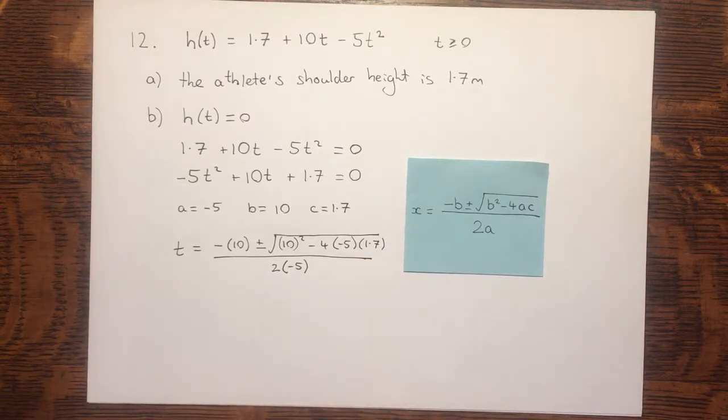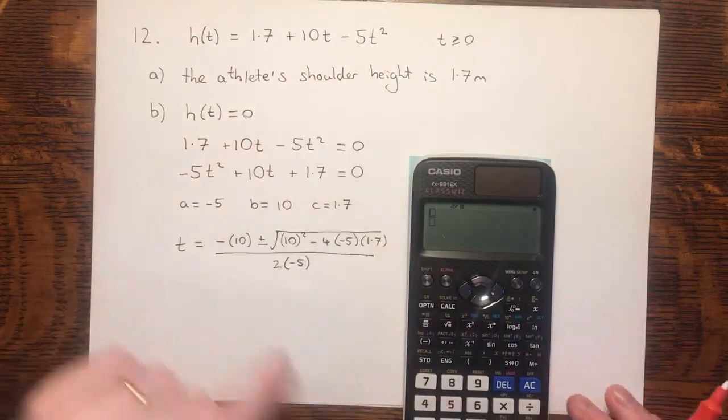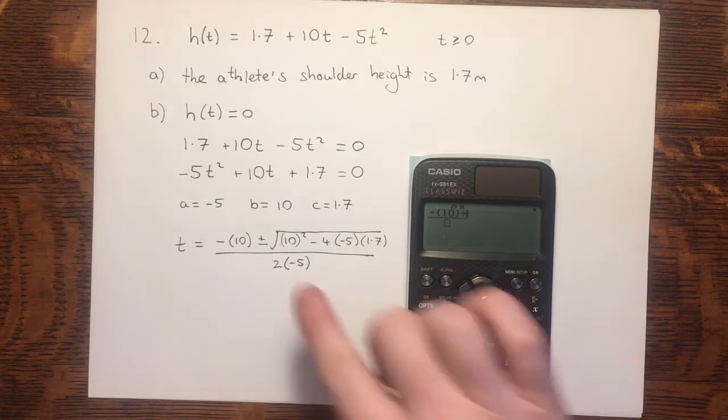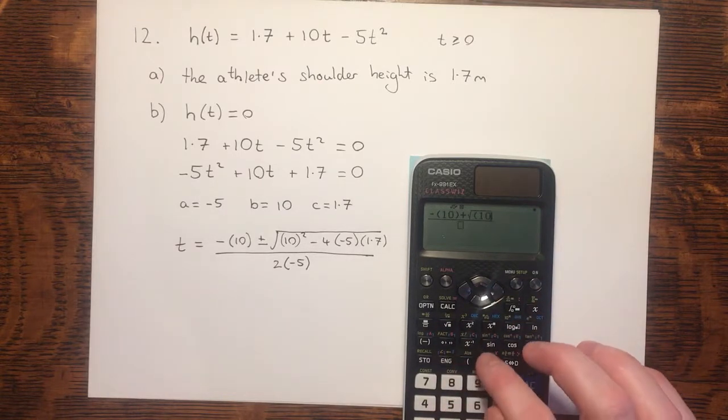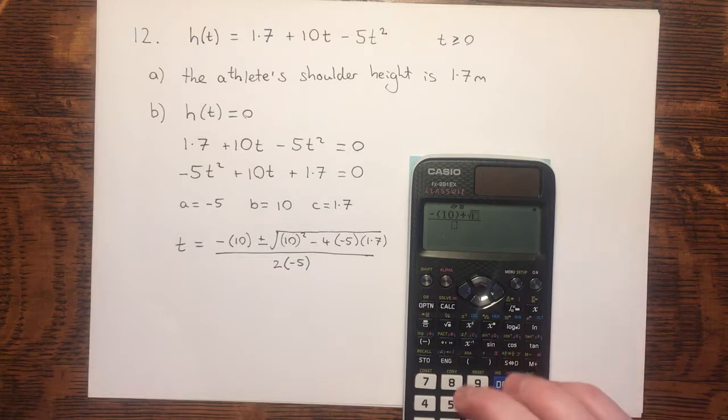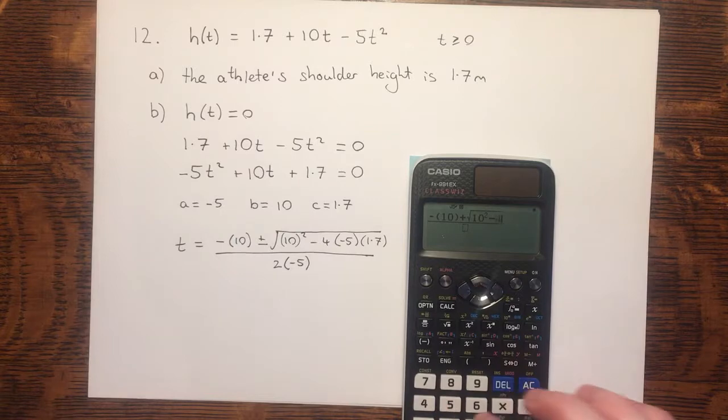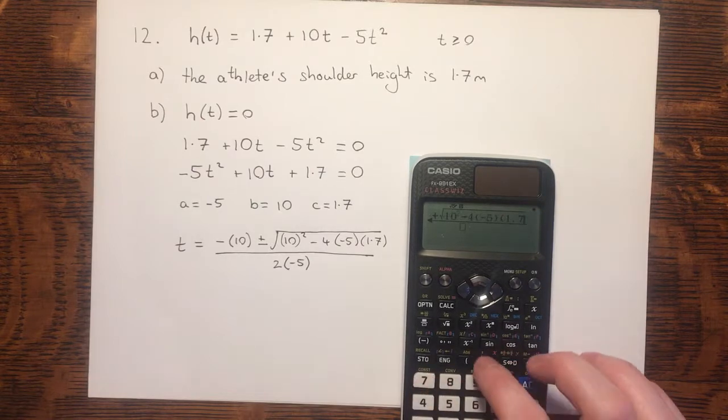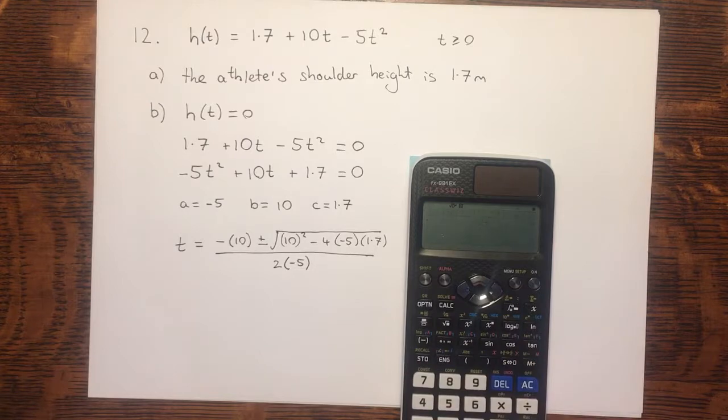Entering this into the calculator can be done exactly as it appears there. Minus 10, plus, in this case I'll start with a plus, I can change it to a minus later, the square root of, although to be honest, if it's a positive I don't really need the brackets, 10 squared, minus 4, minus 5's, and then 1.7. On the bottom, 2 and minus 5, and we have our answer.